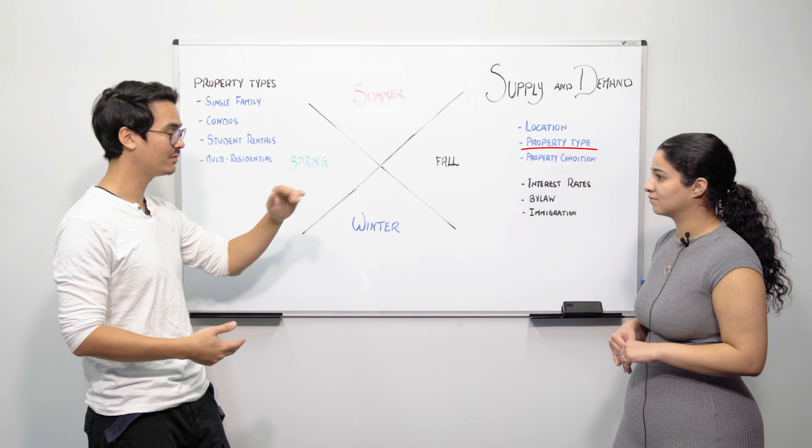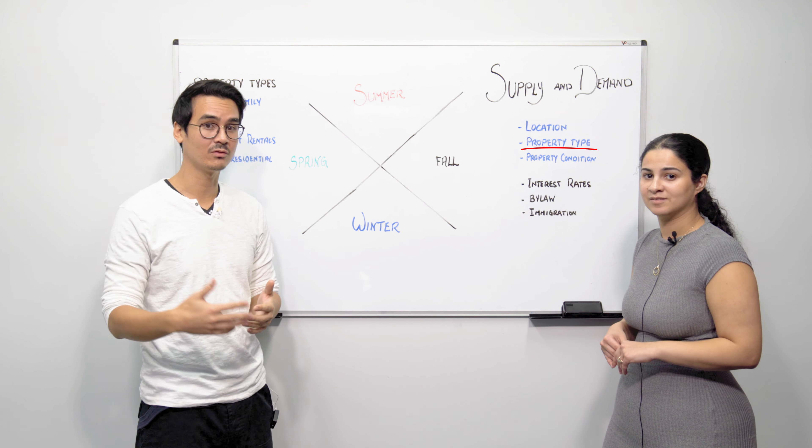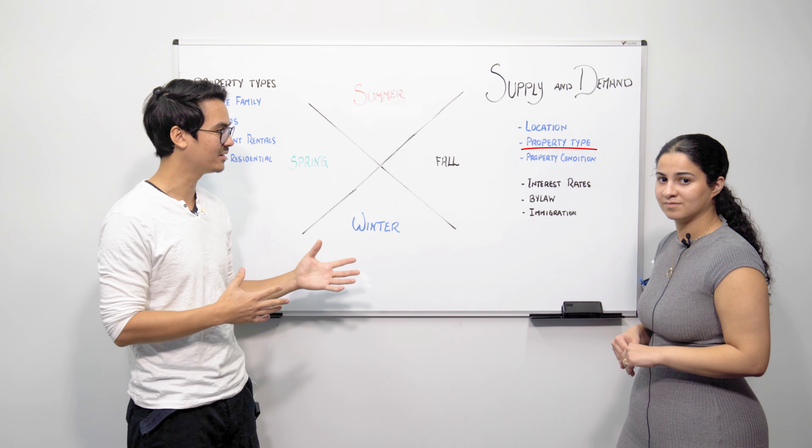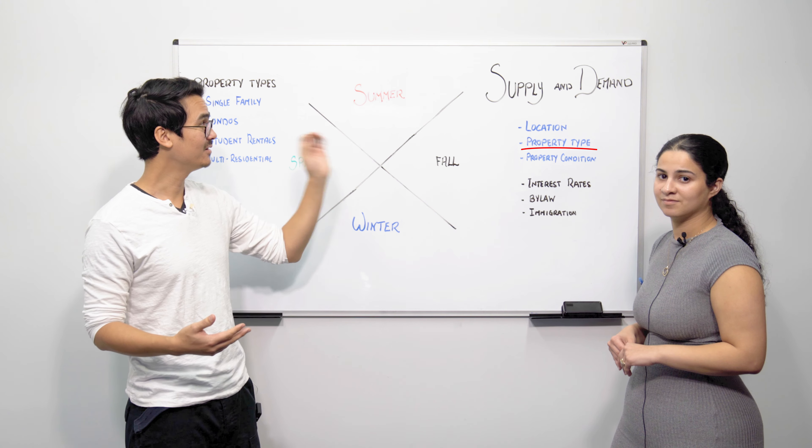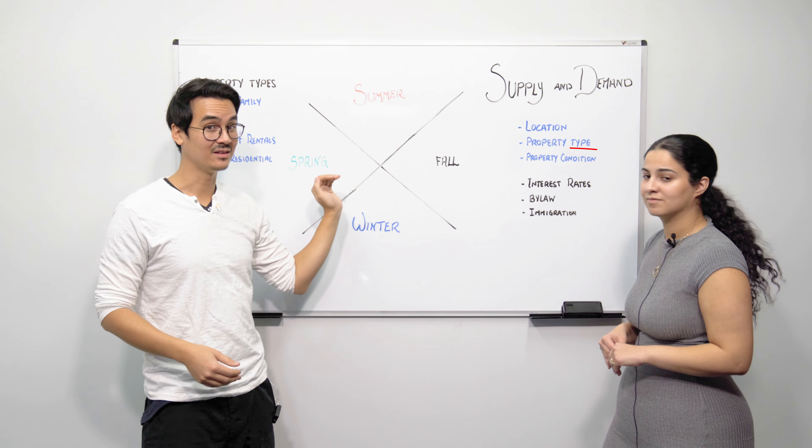But then if you're looking at a multi-residential property which is heavily affected by the numbers alone because investors are really only considering these things based on the numbers, or at least they should be, and so they are affected by these things in kind. So immigration, interest rates, those things will play a bigger influence in terms of the demand of a property as opposed to the seasons.